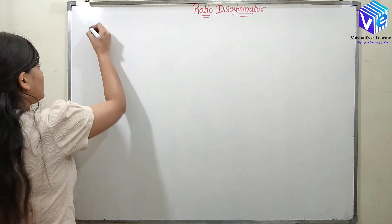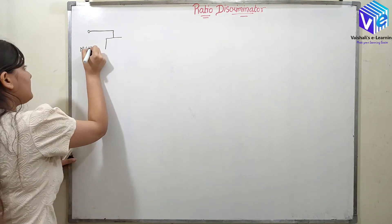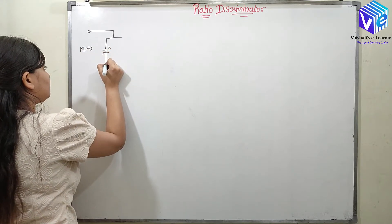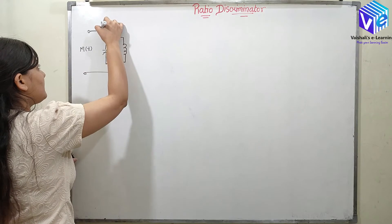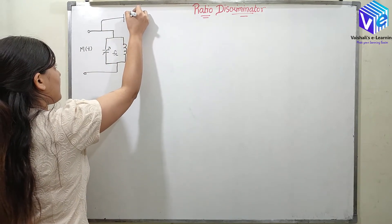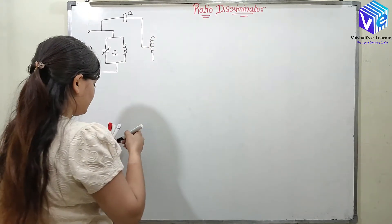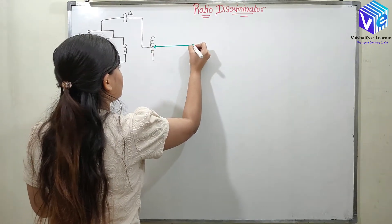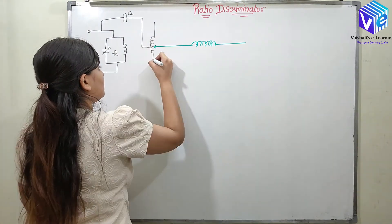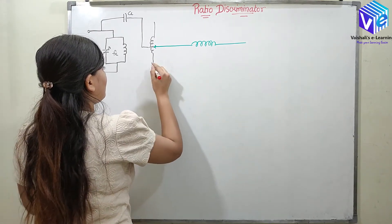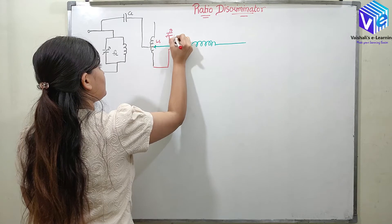Talking about the circuit — it has largely the same circuit as the Foster-Seal discriminator. We have the input connected to a capacitor and an inductor, tuned to FC. There is a coupling capacitor connected to a center-tapped secondary inductor, and at the center we have another inductor. In the secondary we have one capacitor — LS and CS.